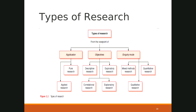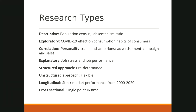We have discussed research by application. Now let's move to research by objectives. There are four types: descriptive, exploratory, explanatory, and correlational research. I recommend exploratory and explanatory research. I do not recommend descriptive research at all. A descriptive study merely describes a situation or problem and provides information about population characteristics — it is a very basic level of research.